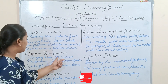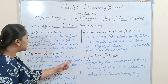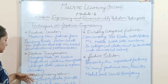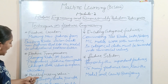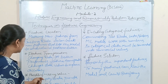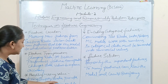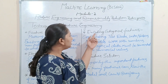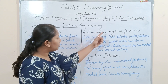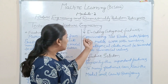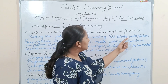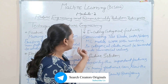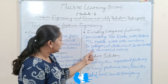Feature transformation changes data values to improve accuracy. The next technique is handling missing values — fixing empty data points, which can cause errors in the model. Moving to the next technique, encoding categorical features: converting text data into numbers. Machine learning models work with numbers, so categorical data must be converted into numerical values.